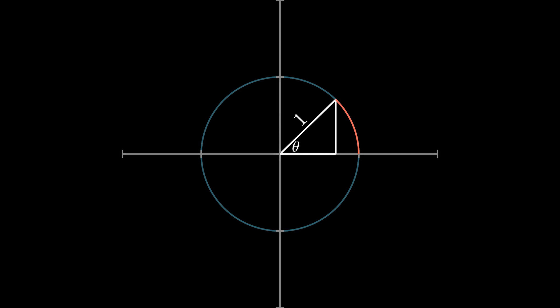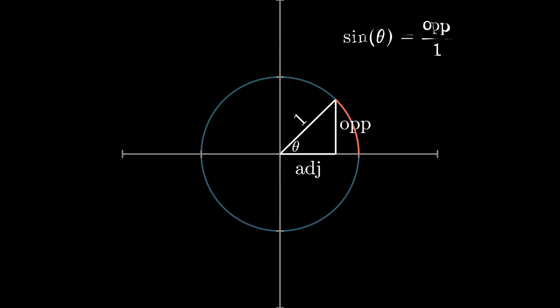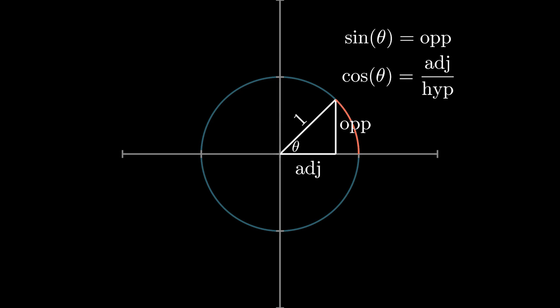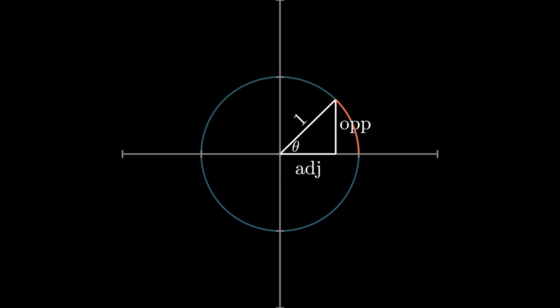This is where our trig functions sine and cosine come into play. Sine theta is defined as the ratio between the side opposite of our angle theta and the hypotenuse, but since our hypotenuse is 1, sine theta equals the opposite side. Similarly, cosine theta is adjacent over hypotenuse, so cosine theta equals the adjacent side. Therefore, this point on the circle can be described as (cosine theta, sine theta). In fact, this is where polar coordinates come from.